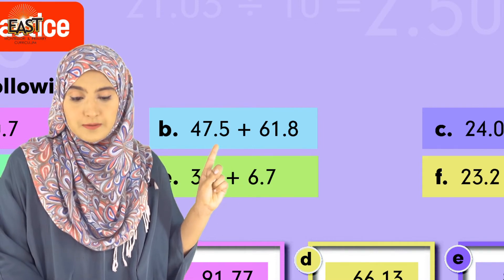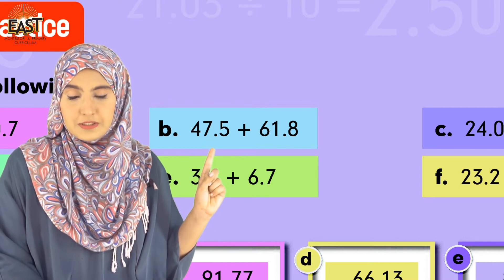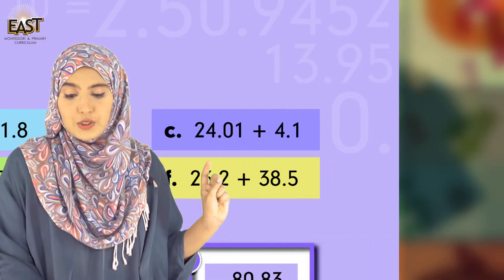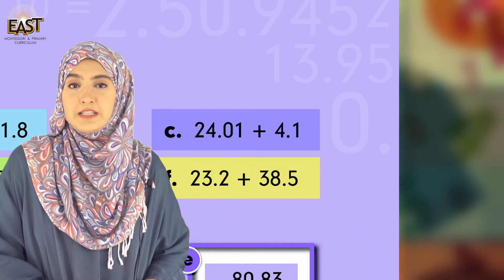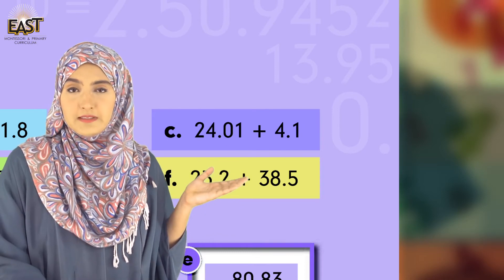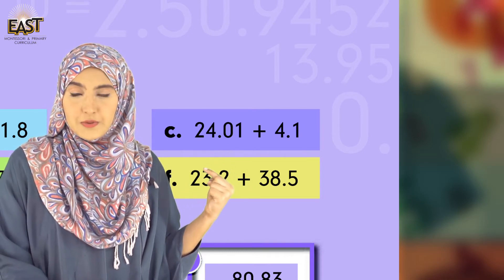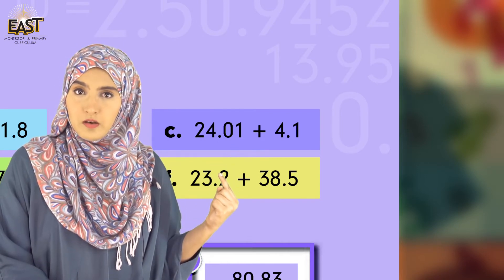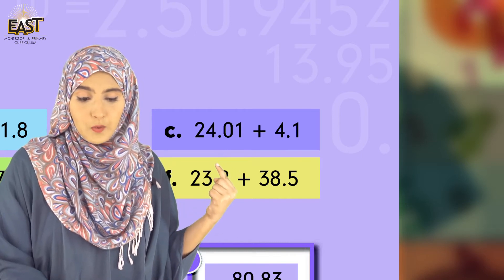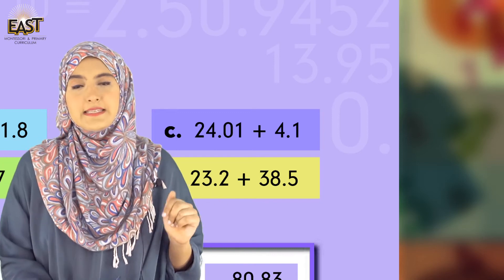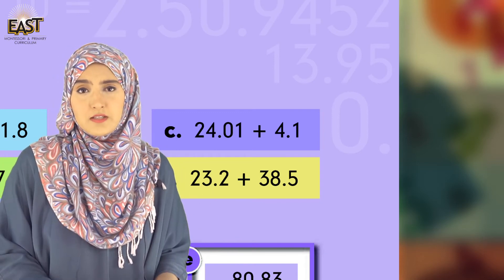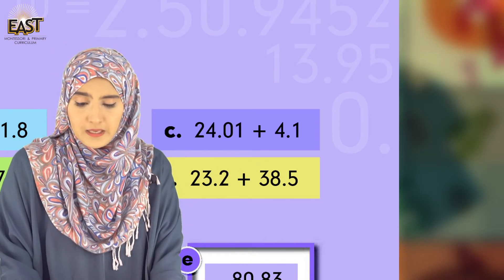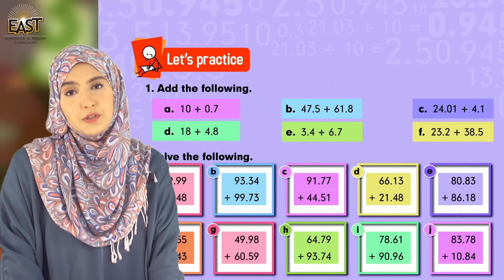When we write the final answer, we have to place the decimal in the right place, just like here: 109.3. Now moving to the next part which is part c: 24.01 plus 4.1. Here is the solution - point below point. You have to place the point and then start adding. See, no hard and fast rule, only you have to keep in check the point with point placement. Now I want you all to solve the next three parts on your own.